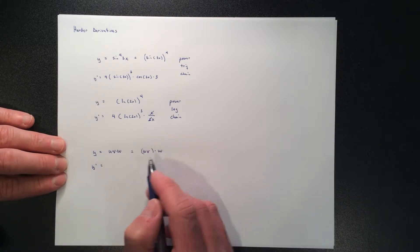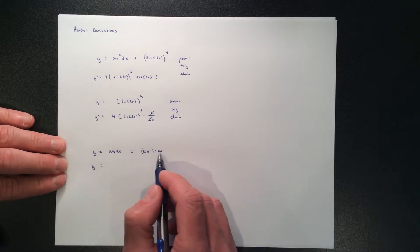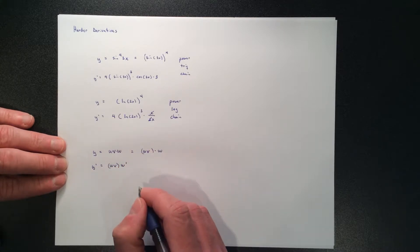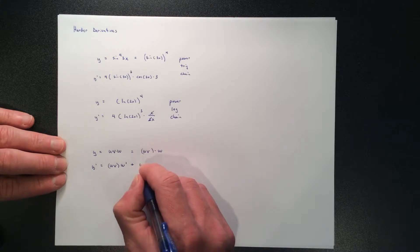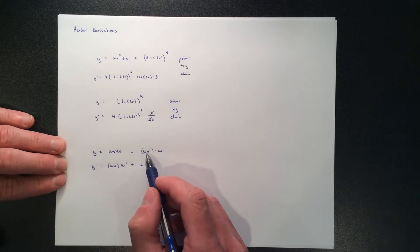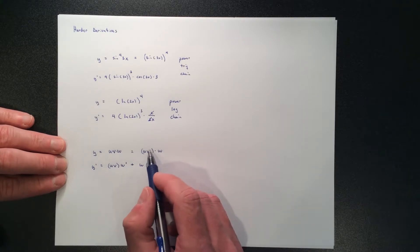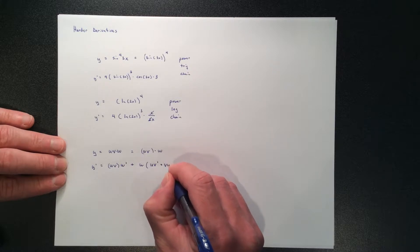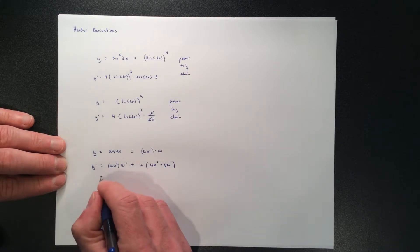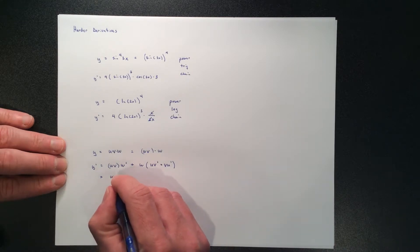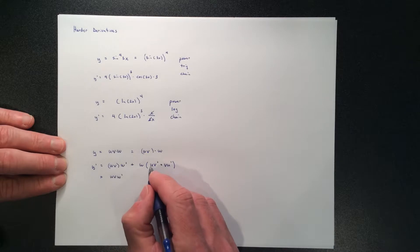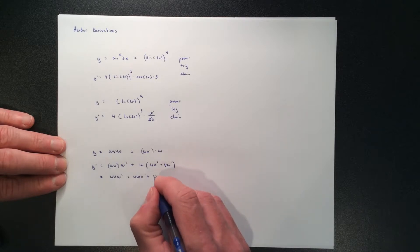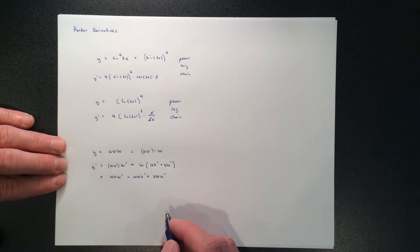Follow the typical product rule: the derivative of two functions multiplied together is the first function uv times the derivative of the second, w prime, plus the second function times the derivative of the first. The first function is a product itself, so taking its derivative requires its own product rule: uv prime plus vu prime. Looking at the result, there's total symmetry: uv·w prime, plus uw·v prime, plus vw·u prime.